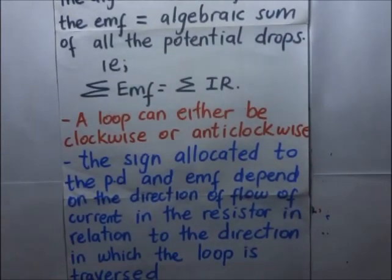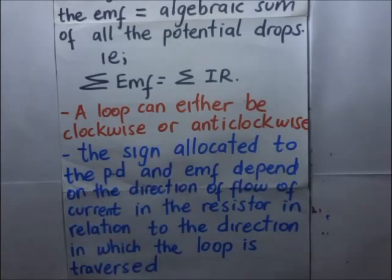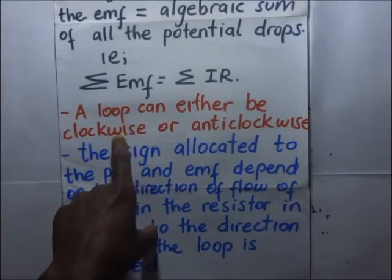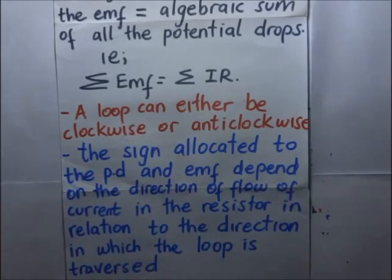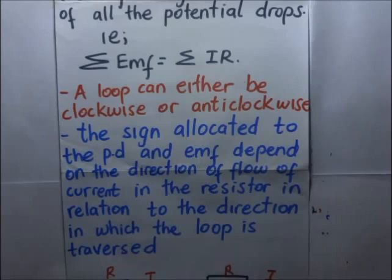A loop can either be clockwise or anti-clockwise, as long as it is in a closed circuit. You need to know that if you have chosen to make your loops clockwise in a certain circuit, then they all have to be clockwise. If you've chosen anti-clockwise, then they should all be anti-clockwise for a given circuit. The sign allocated to the potential difference and the EMF will depend on the direction of flow of current in the resistor relative to the direction in which the loop is traversed.